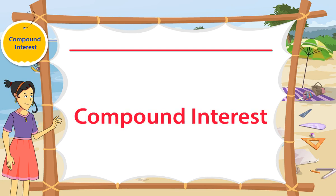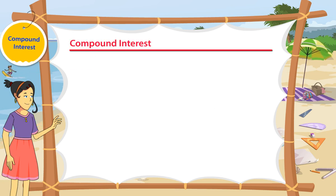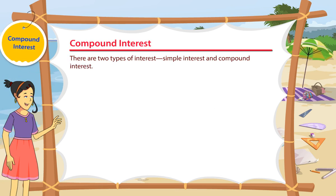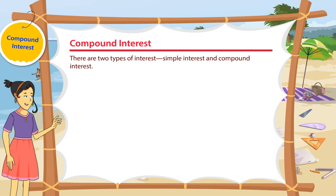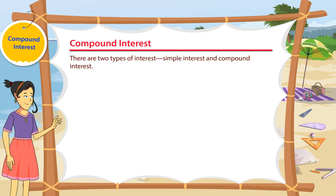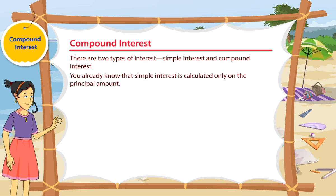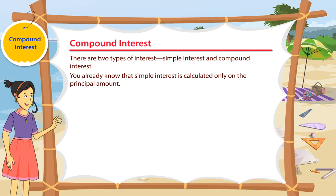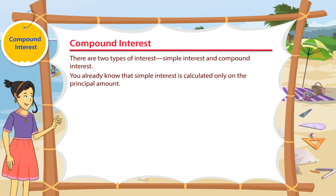There are two types of interest: simple interest and compound interest. You already know that simple interest is calculated only on the principal amount.